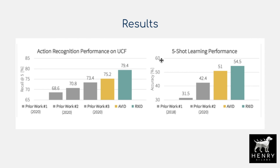Putting this all together, the results show improvements from RXID over AVID, including gains on UCF 101 and five-shot learning performance, where only five demonstrations of each class — playing tennis, kicking a soccer ball, hitting a baseball — are provided, showing how much the model benefits from additional audio training.